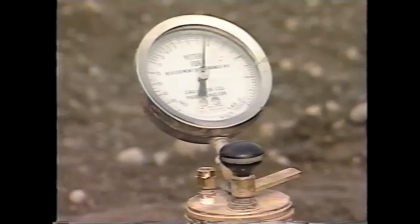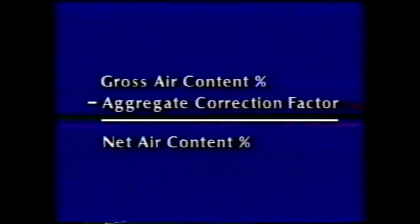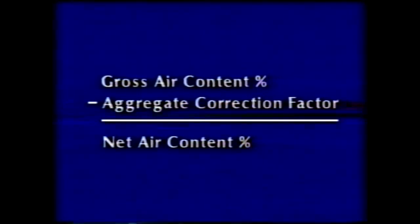This is the gross air content percent. From it, the aggregate correction factor is subtracted. The result is the net air content percentage of the concrete.